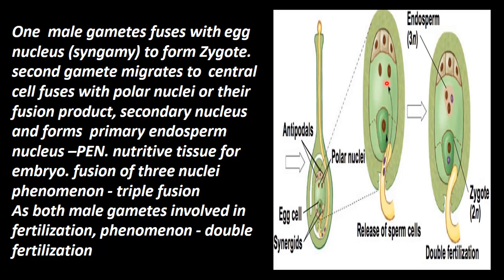In some plants, the central cell contains two free nuclei. Why are they combined? That fusion product is called the secondary nucleus — it results from the combination of the two polar nuclei and forms what is called the secondary nucleus.